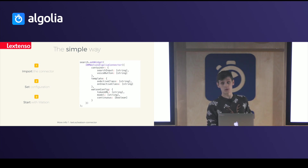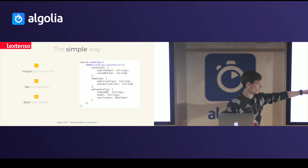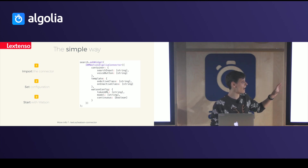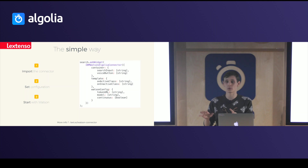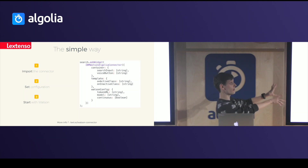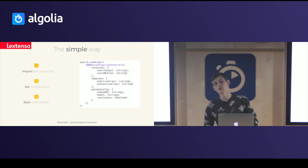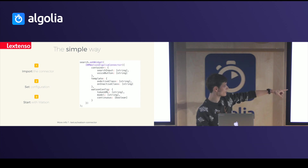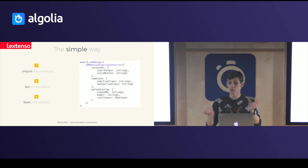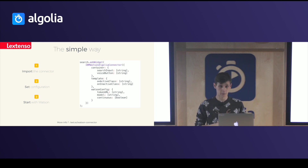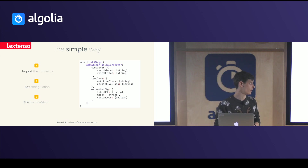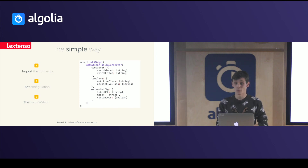It is very simple to integrate into your own website. First, you just import it. Then you go to the configuration — it is basically almost like what Algolia does with their own widgets, so it is very simple. Watson requires a token to verify usage. You have a token URL attribute that fetches the token for you automatically. There are plenty of other functions available if you want to do your own. And then you just start using Watson.